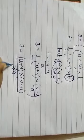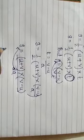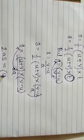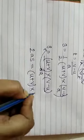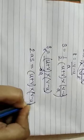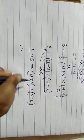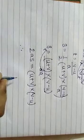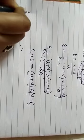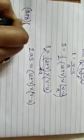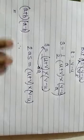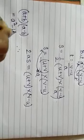In case if I am taking this 2a up over here, it becomes 2as is equal to u plus v into v minus u. Now we know that very well. We have learned in standard 8th. A plus b into a minus b will become a square minus b square.